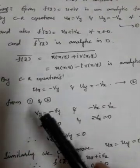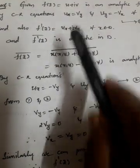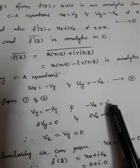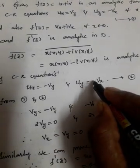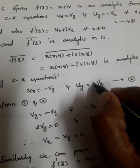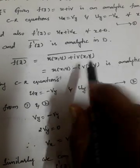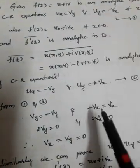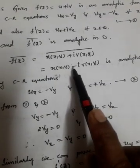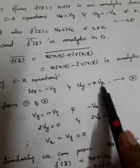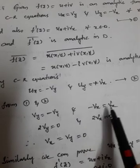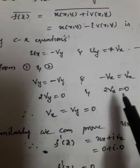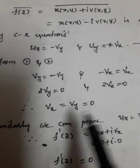Now we combine both sets of CR equations. From equation one, u_x = v_y. Substituting into the conjugate's CR equation u_x = -v_y, we get v_y = -v_y, so 2v_y = 0, meaning v_y = 0. Similarly, from u_y = -v_x and u_y = v_x, we get -v_x = v_x, so 2v_x = 0, meaning v_x = 0. Therefore v_x = v_y = 0.